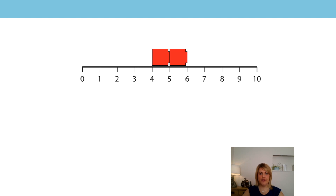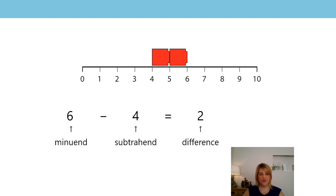Let's think back to some previous learning. This was the representation that you explored with Mr Whitehead. How are we using this to find the difference? The minuend is six, the subtrahend is four, and six subtract four is two, so the difference is two. Can you write a number sentence for this representation on your piece of paper? The minuend was six, the subtrahend was four, and the difference was two: six subtract four equals two. Well done.